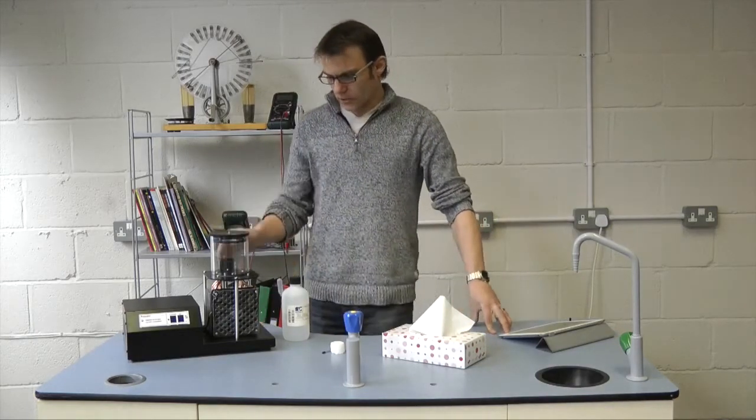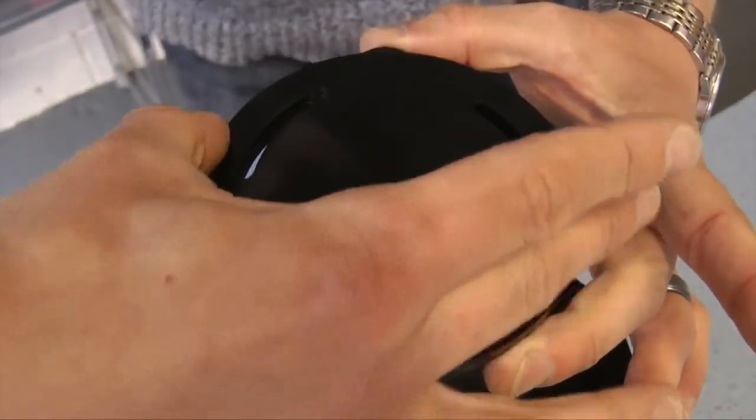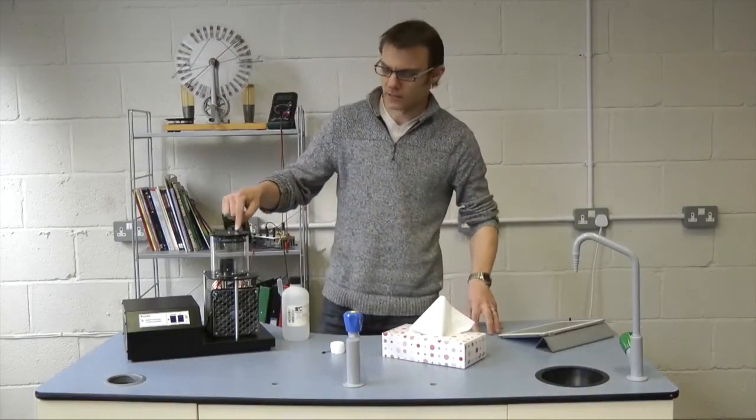So once your unit is out of the box, all you need to do is rotate the lid so the slots are open on the top and give you access to the felt.